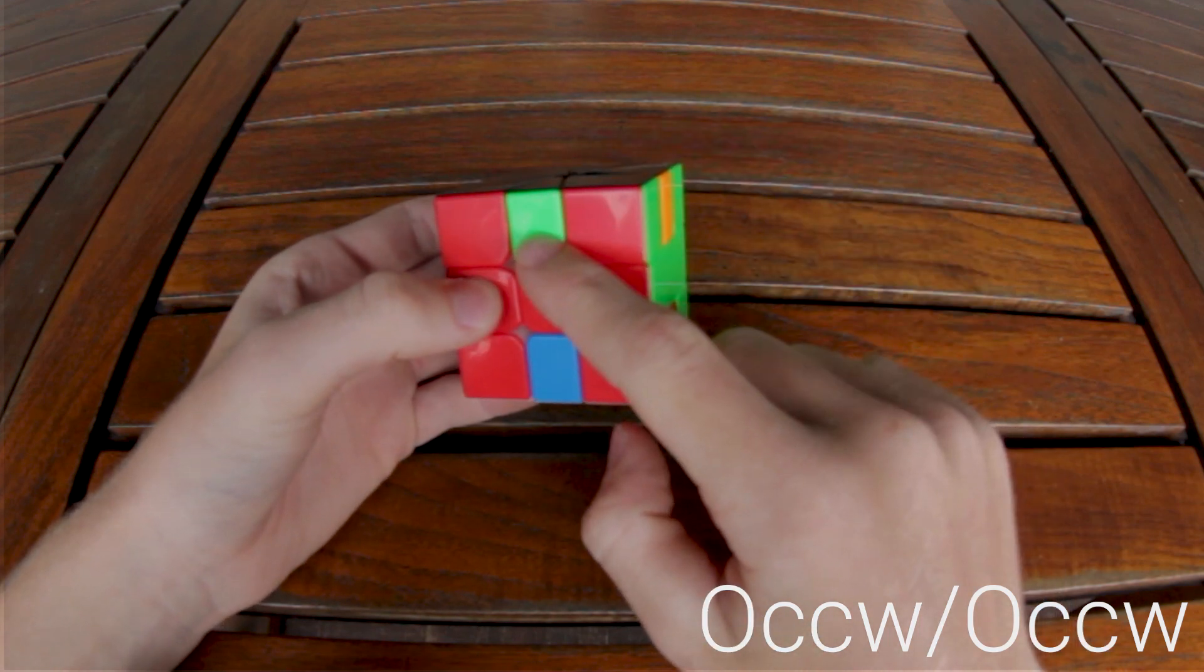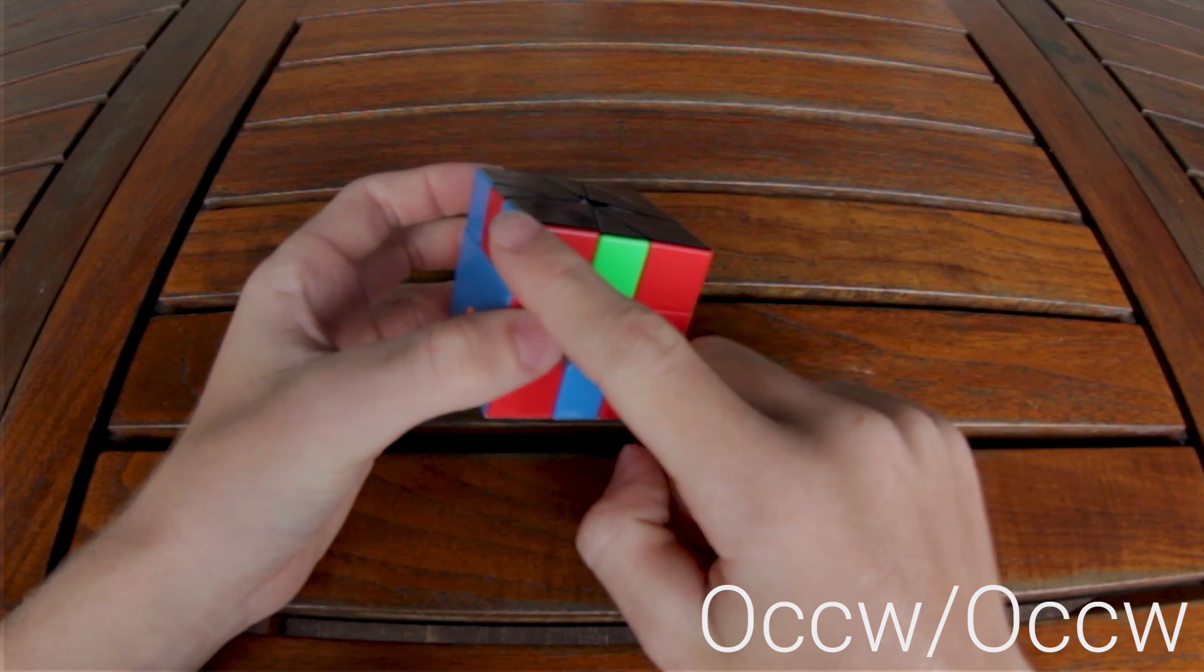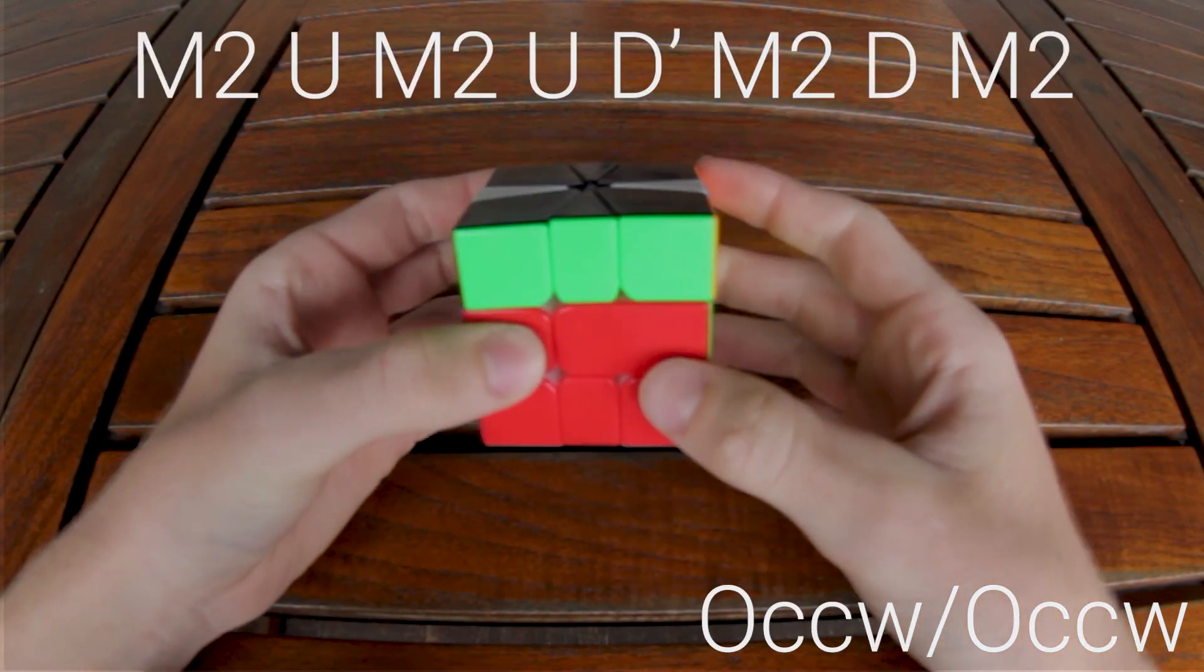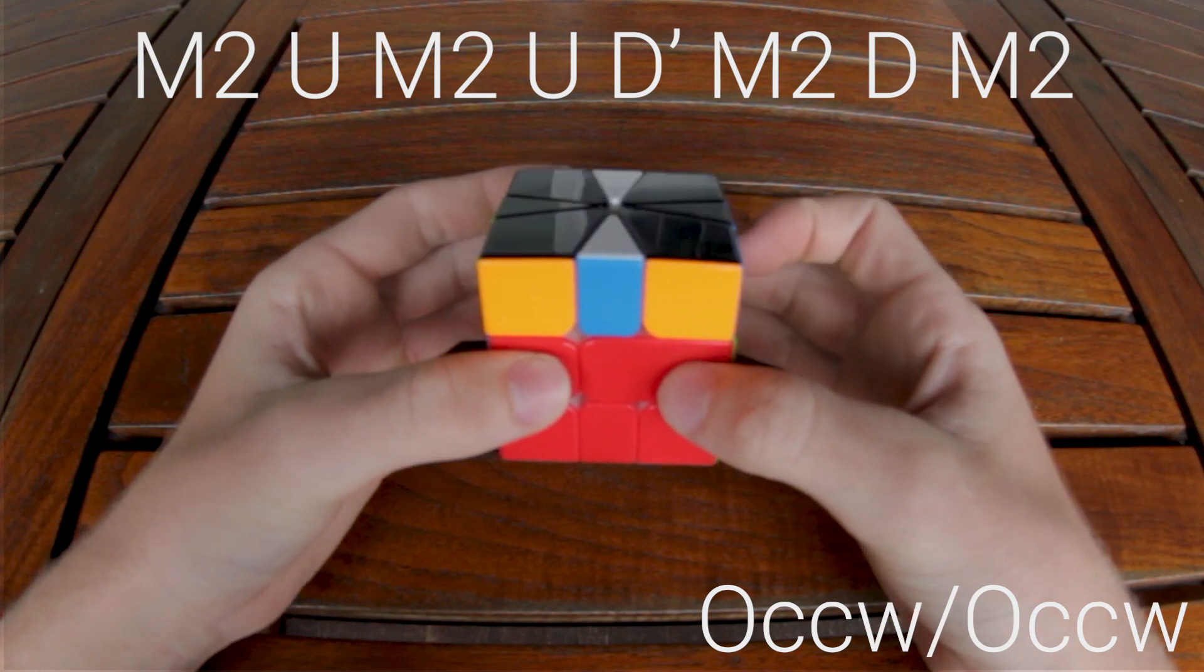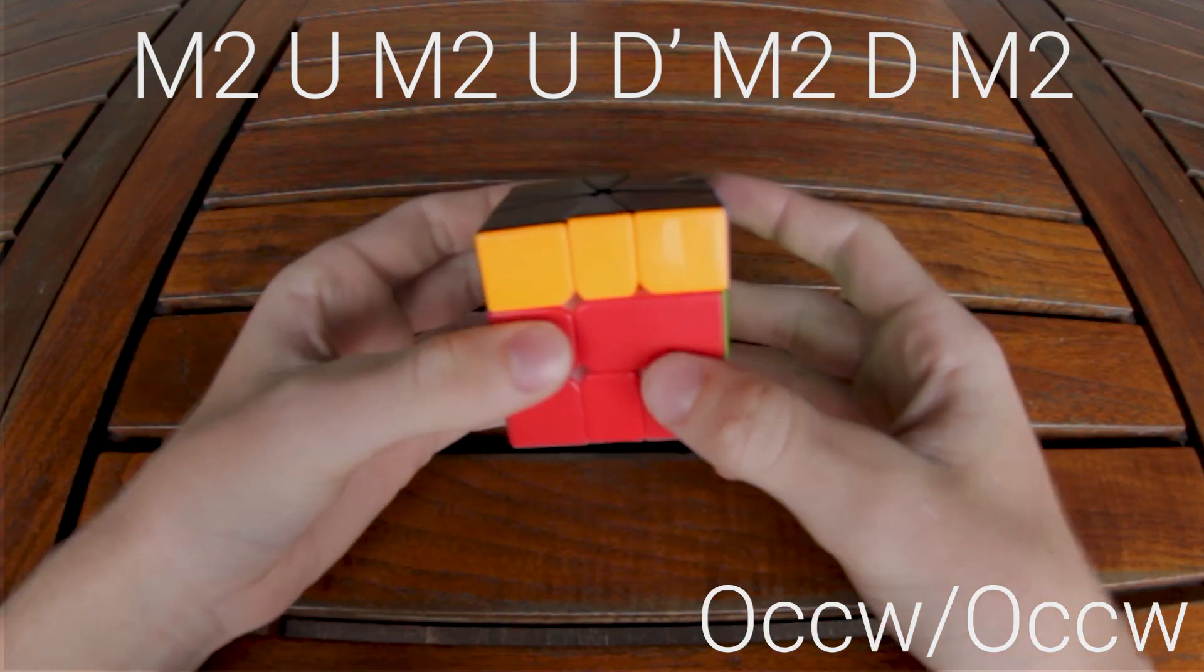The algorithm for it is you check where the green is going. The green is going to the right, so your U move will be going to the left. So you do M2, U, M2, U, D prime, M2, D, M2, and AUF.